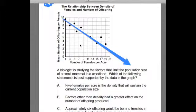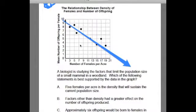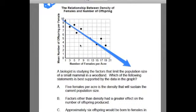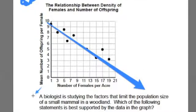So here's the problem. Just looking at the picture, I know it's data analysis and maybe a little bit of algebra. Let's look at the question and then look back at the picture. The question says, a biologist is studying the factors that limit the population size of a small mammal in a woodland. Which of the following statements is best supported by the data in the graph?